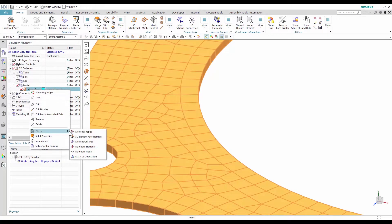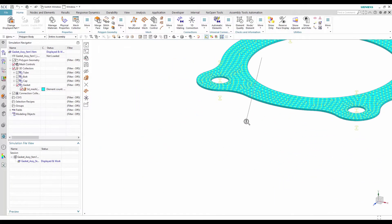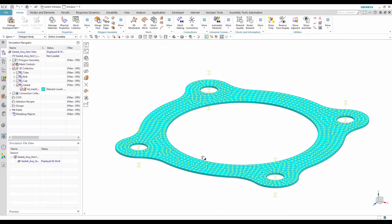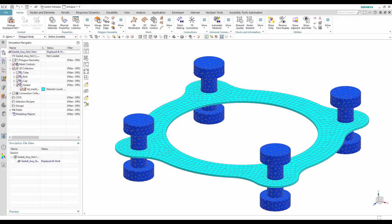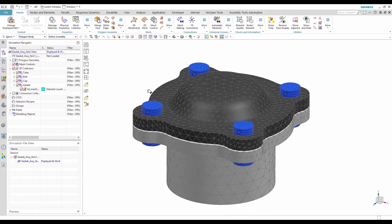I can quickly verify that the orientation is well defined using the material orientation check. I see that all the arrows point in the thickness direction. Since I already meshed the other components, I can now open my simulation file.